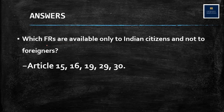Which fundamental rights are available only to Indian citizens and not to foreigners? Those are the rights under five articles: Article 15, 16, 19, 29, and 30. Article 15 is prohibition of discrimination based on race, religion, caste, and so on. Article 16 is equality of opportunity in public employment. Article 19 is the right to freedom of various kinds — freedom of speech, assembly, association, and others. Articles 29 and 30 are cultural and educational rights, mostly for minorities.